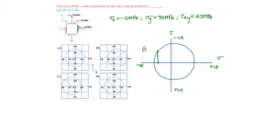This point is (-10, -20) and here another point is sigma y, i.e., (30, 20). On joining these two, we get the center of the circle, and with this center and this distance as radius, we can draw the Mohr circle.